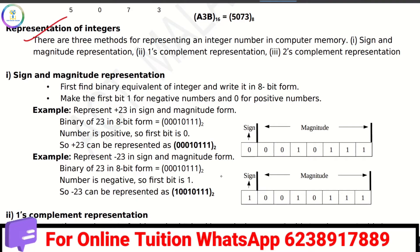You can see in computer memory. There are different representations: sign and magnitude representation, one's complement representation, and two's complement representation.